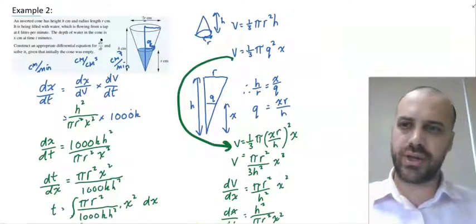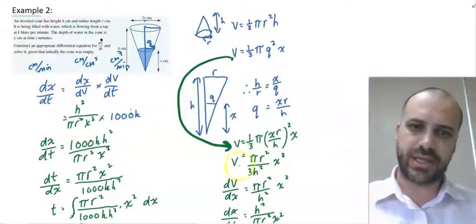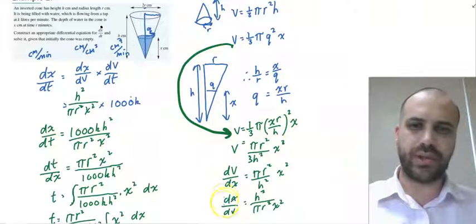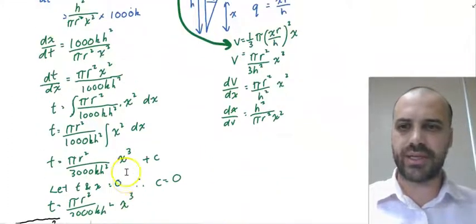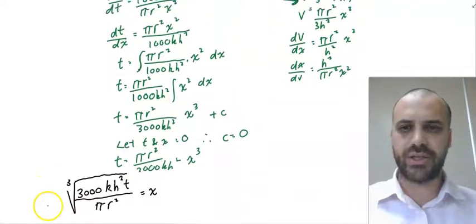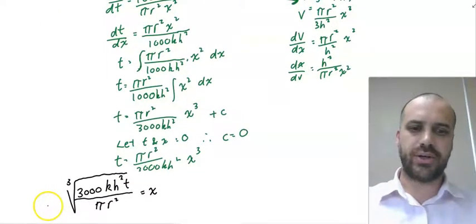Obviously, there's a lot going on there. We've done our related rates. We had to do a little bit of work here to come up with dx/dV. We've subbed it in. And then from here, we solved and then rearranged. So quite a bit going on. It's a tough one.